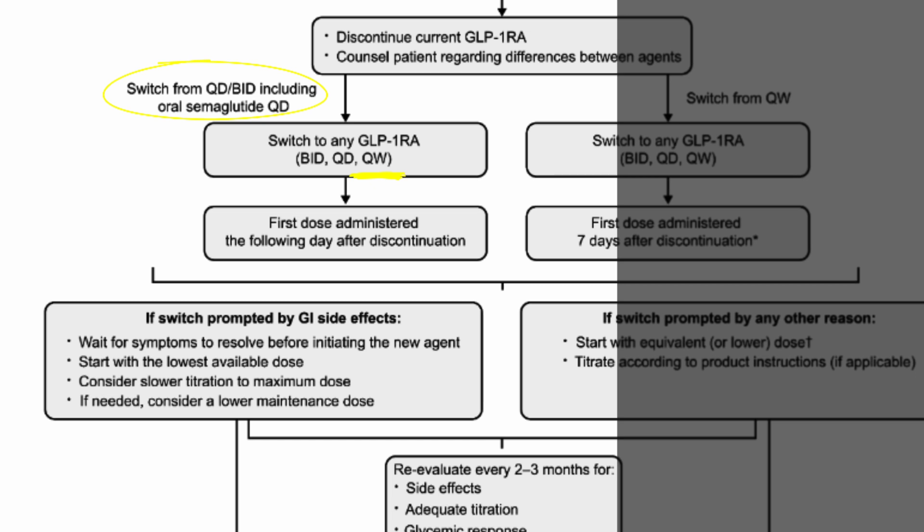The recommendation is that you administer the first dose the following day after discontinuation. So if switching from Rybelsus to Ozempic, you take your last Rybelsus on a Sunday and start the Ozempic on Monday. Or if it's Victoza to Trulicity, discontinue the Victoza on Sunday and start Trulicity the next day. There are a few additional recommendations: if you're switching because of side effects — for example, gastrointestinal side effects — they recommend waiting for those symptoms to resolve before starting the new one. They also recommend starting the new medication at the lowest possible dose, and considering a lower maintenance dose as well.